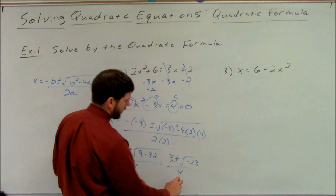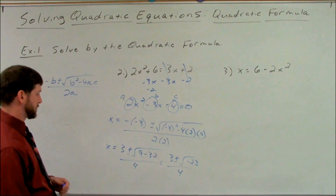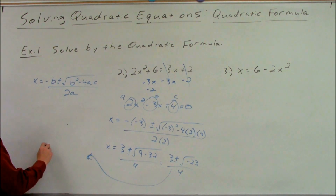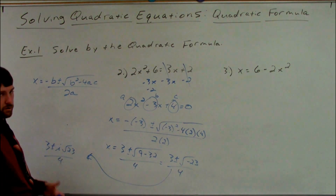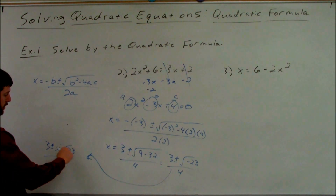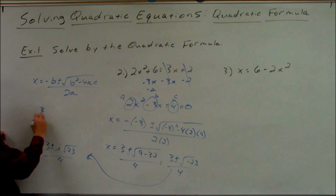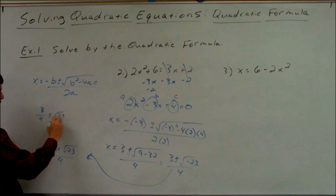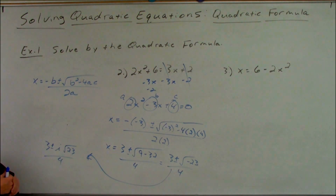Simplify the square root if possible. 23 has no perfect square factors, but the negative we can deal with. So that becomes 3 plus or minus i square root of 23, all over 4. If you write the i after the square root that is okay — I typically write it in front just so there's no confusion about what is under the square root. You could also write it in complex form as 3 fourths plus or minus square root of 23 fourths times i. That was the same solution we got in the completing the square lecture.